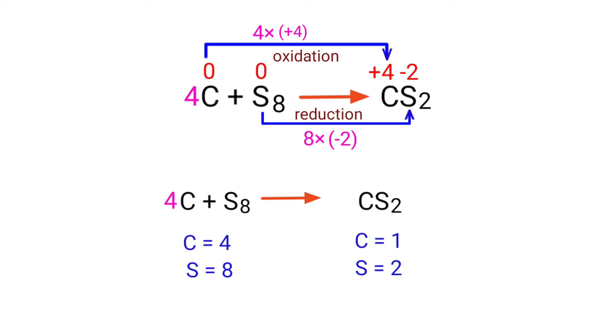The number of atoms are not balanced on both sides. To balance the chemical equation, we need to use coefficients. A coefficient is a number that we place in front of a chemical formula. We need to put a coefficient of 4 in front of CS2.